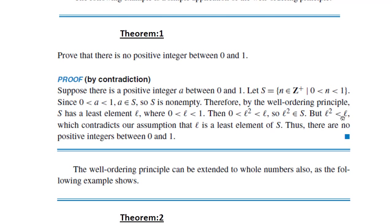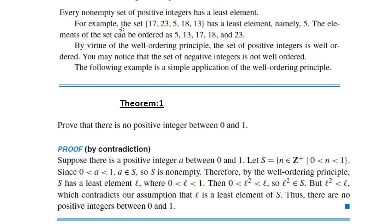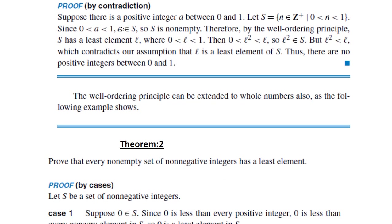This contradiction arises from our wrong supposition that there exists a positive integer 'a' between 0 and 1. Thus there is no positive integer between 0 and 1. You have now seen an application of the Well-Ordering Principle in this theorem, and there are more beautiful applications coming in this lecture and the next.